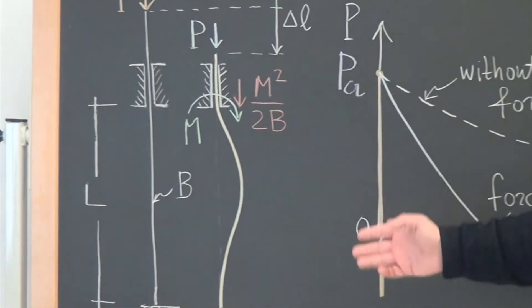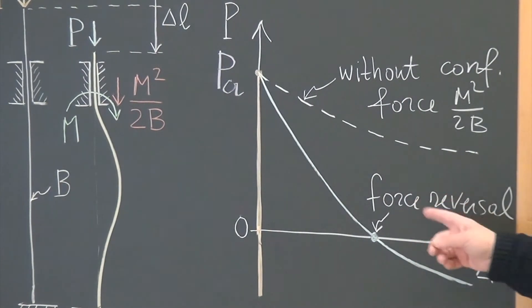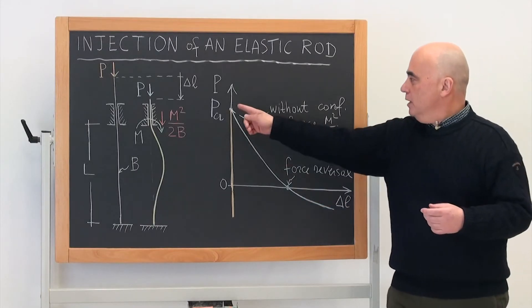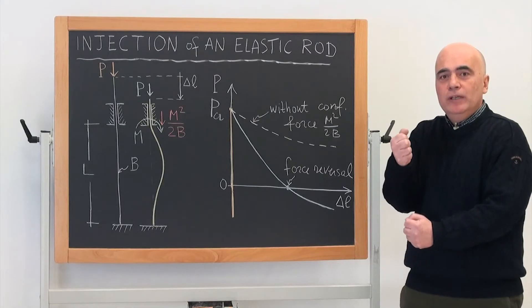In particular, we see here the post-critical behavior of the structure and it displays a force reversal, so that we have initially to push the system to reach this point and then we have to pull it to maintain equilibrium.